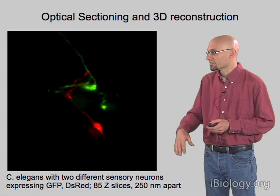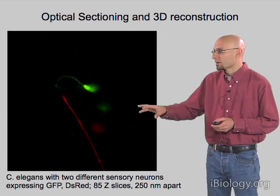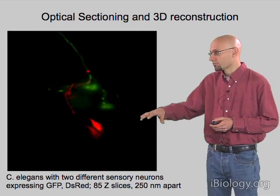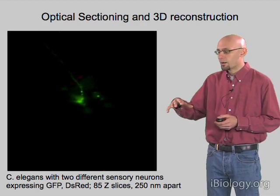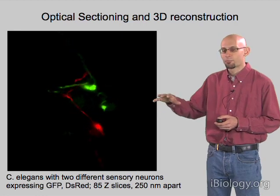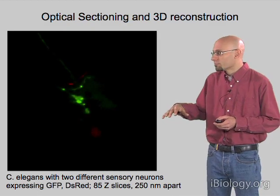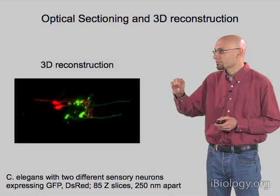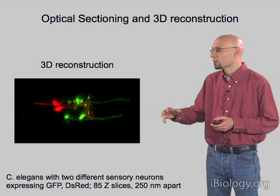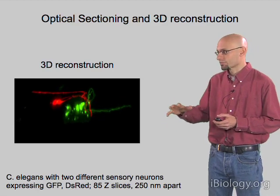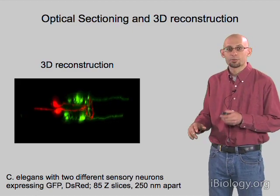Here's another example — this is a worm C. elegans expressing two different sensory neurons labeled in green and red. I'm showing here 85 Z-slices moving through the full thickness of the head of this worm. You can see there's a lot of information there, but it's hard to interpret what the connectivity of these neurons is just from the Z-slices alone. When we render those in 3D and compute views looking through different orientations, it's now much easier to appreciate what the geometry of these neurons is.